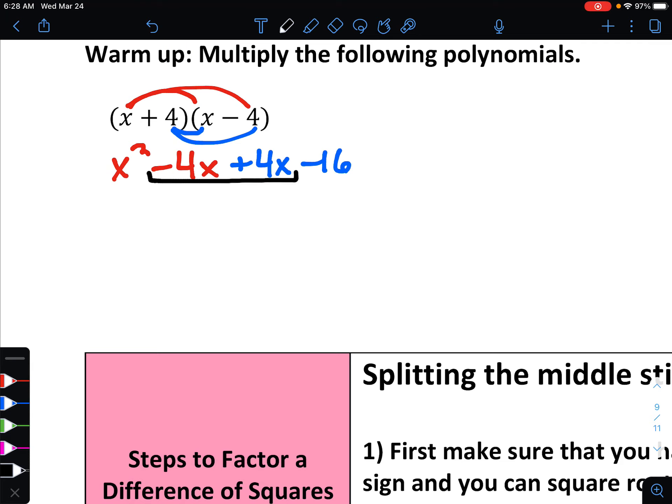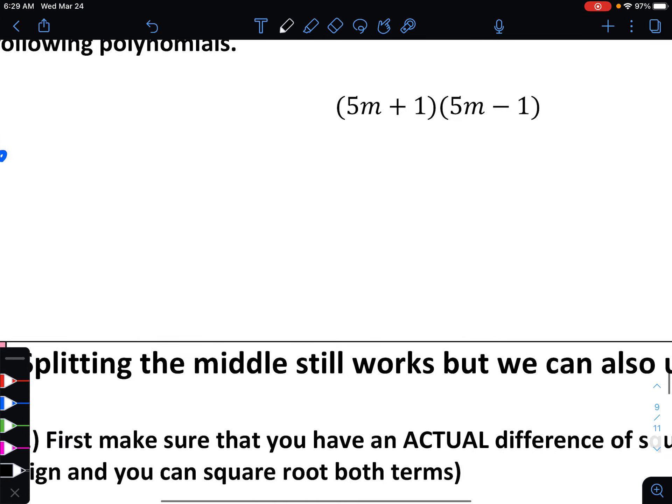From there, you just simplify, you combine like terms, the two terms in the middle, negative 4x and positive 4x, both add to be zero. That leaves you with x squared and a minus 16. And there is your final answer.